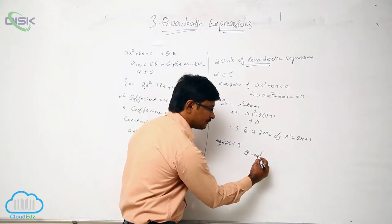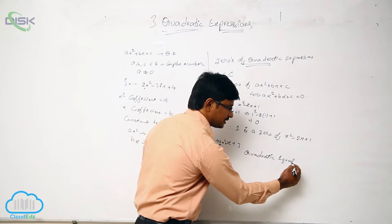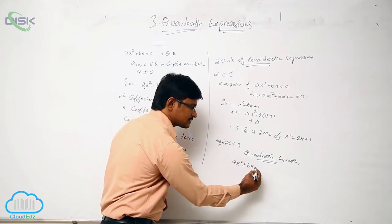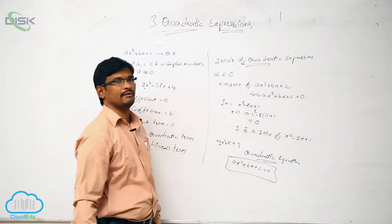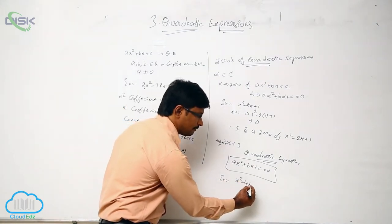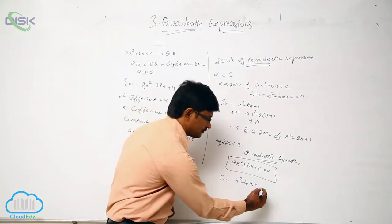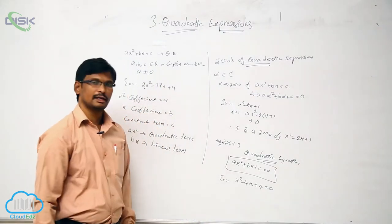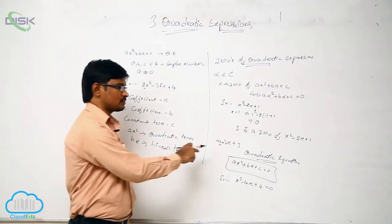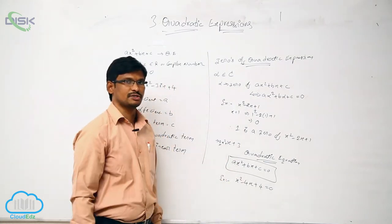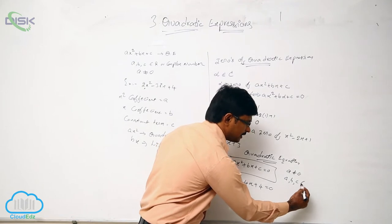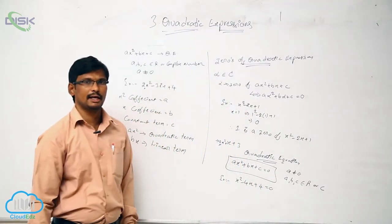Now we will see what a quadratic equation is. Any equation in the form Ax squared plus Bx plus C equal to 0 is called a quadratic equation. For example, x squared minus 4x plus 4 equal to 0 is a quadratic equation. Here, A, B, and C may be real or complex numbers, and A should not be equal to 0.